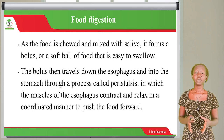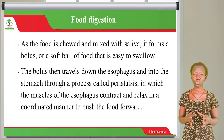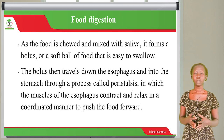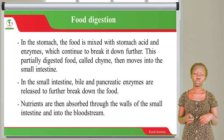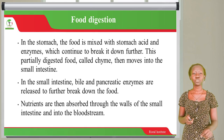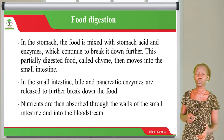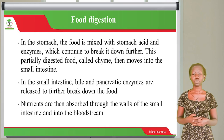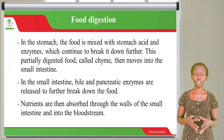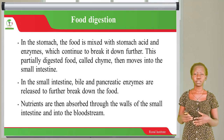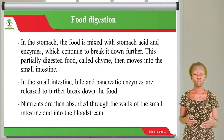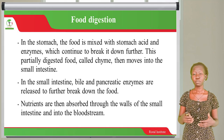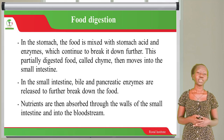During this process, the muscles of the esophagus contract and relax in a coordinated manner to push the food forward. Once the food is pushed from the esophagus down to the stomach, it is mixed with stomach acids and enzymes that continue the breakdown further into smaller nutrients. This partially digested food, which is called chyme, then moves into the small intestine.